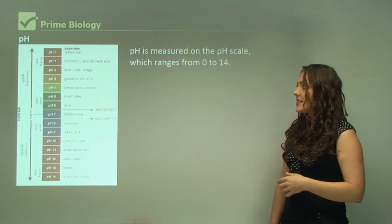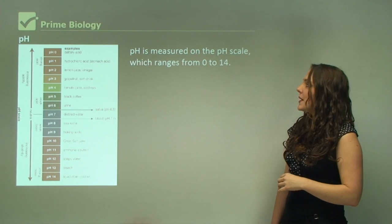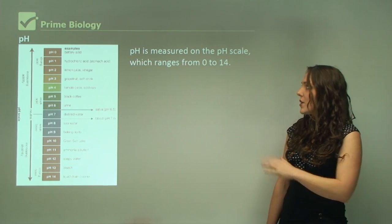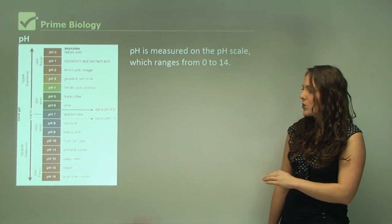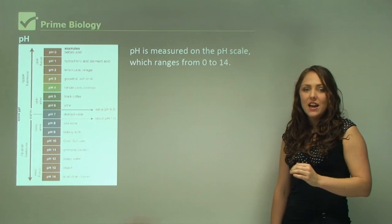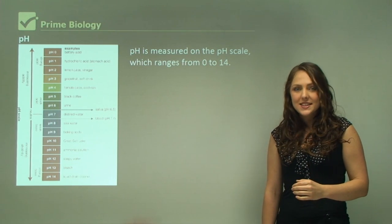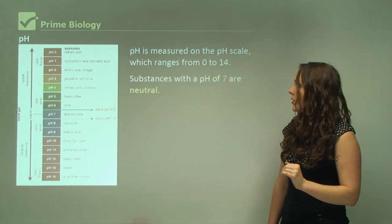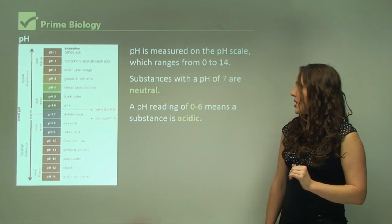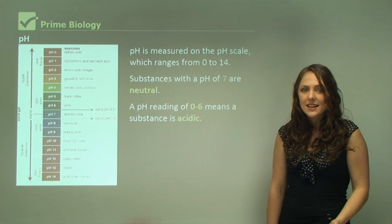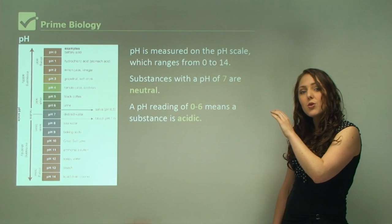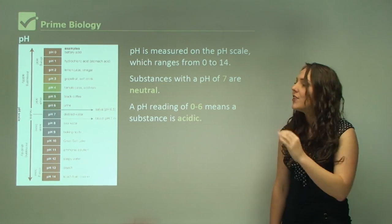This is a standard pH chart. pH is measured on the pH scale which ranges from 0 to 14. At 7 we have distilled water, and that means it is neutral. A pH reading of 0 to 6 means a substance is acidic.